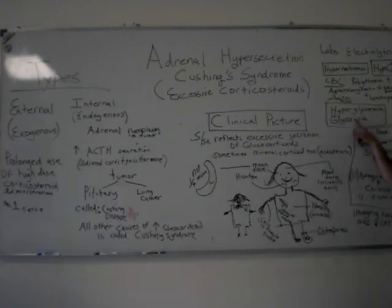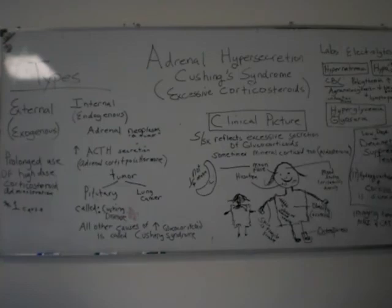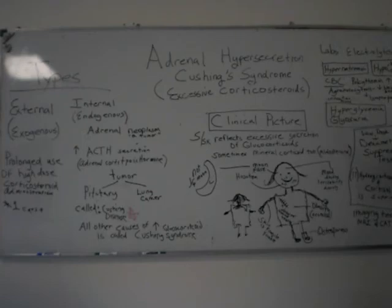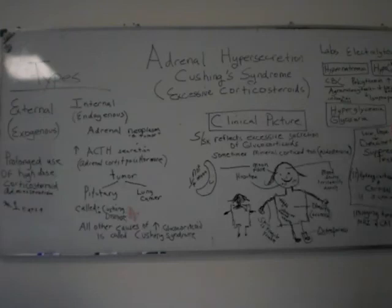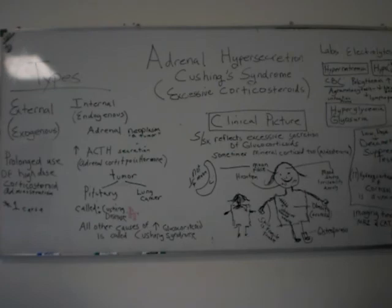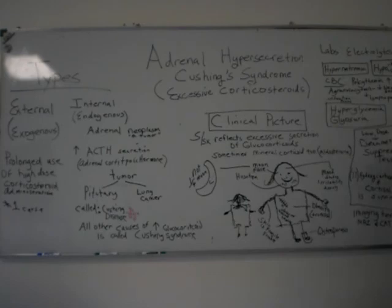Also, insulin doesn't quite work as well with high levels of glucocorticoids. The dexamethasone suppression test: dexamethasone is a steroid, and when you take it, it should cause the pituitary gland's ACTH secretion levels to be much less. Consequently, with much less ACTH, the adrenal glands work very little. So we're giving dexamethasone, and it should tell the pituitary gland that we don't need any more glucocorticoids — it should suppress ACTH secretion.